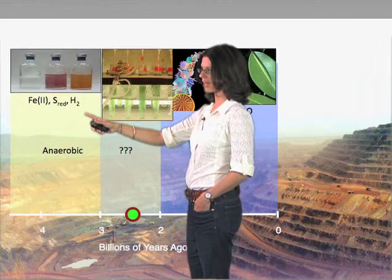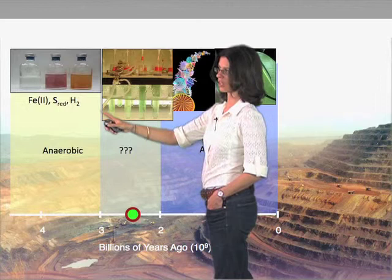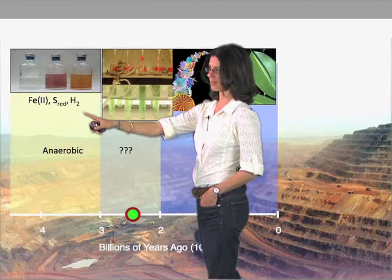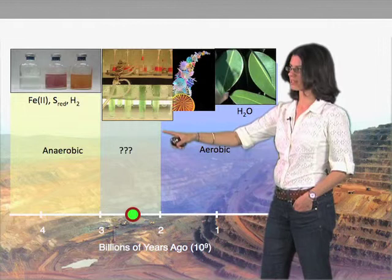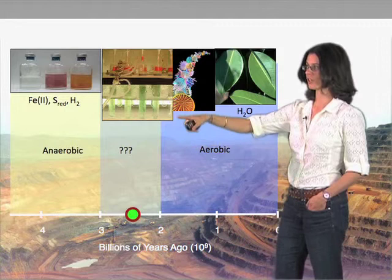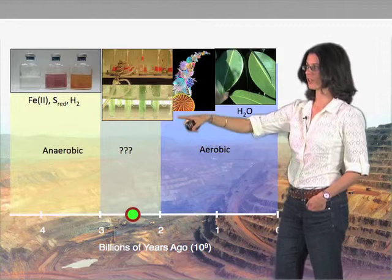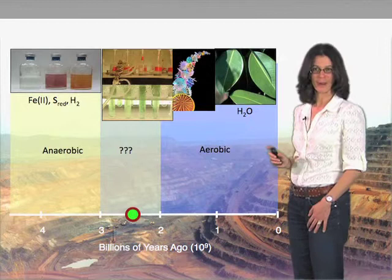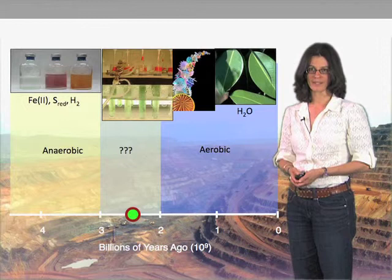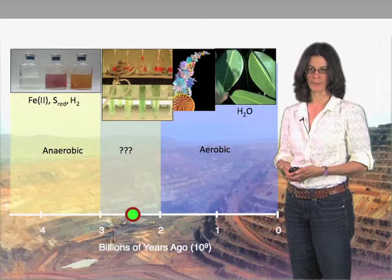But when exactly this happened, and how the evolutionary events came together — such that anoxygenic phototrophs utilizing reduced substrates like hydrogen, sulfur species, or iron as electron donors morphed into a more sophisticated phototroph capable of using water as an electron donor, the cyanobacteria, which in turn became the plastids and chloroplasts found in modern marine algae and plants — we do not know. We do not know when this happened.